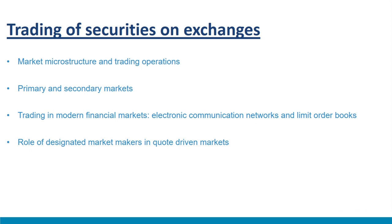If Amazon wants to raise more capital, it can do so by borrowing or selling new shares to investors. This issuance of new shares to raise capital occurs in primary markets. However, such primary issuance is an infrequent phenomenon. Most of the trading takes place on stock exchanges, often called secondary markets. At these exchanges, investors buy and sell shares that are listed on the exchange. This kind of secondary trading only transfers ownership from one owner to another — no new shares are created.